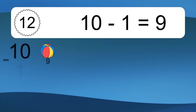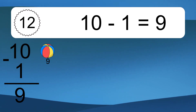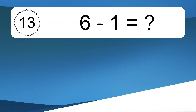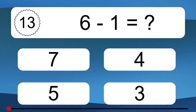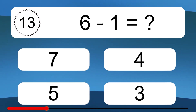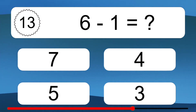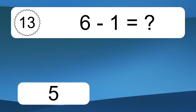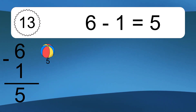19 minus 5 equals 14. Let's count it: 18, 17, 16, 15, 14. 10 minus 1 equals what? 10 minus 1 equals 9. Let's count it: 9.